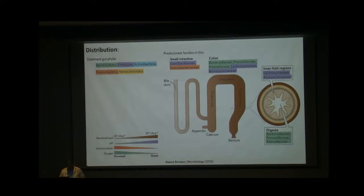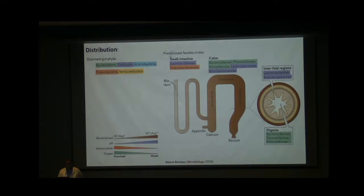Since we are talking about the gut, how is bacteria distributed? I'll be speaking mostly about bacteria, not the fungi or virome, as bacteria is the largest component studied. Looking at the post-gastric part of the gut, I've listed the dominant gut phyla and the families present in the small intestine and colon. What I want to bring your attention to is the figure on the bottom left, where the bacterial load changes from around 100 colony forming units per gram of sample to about 10 to the power of 11 or 12 colony forming units per gram.